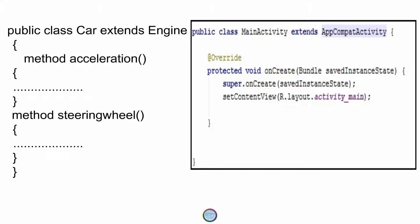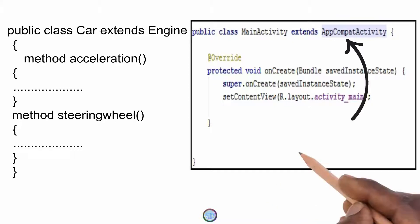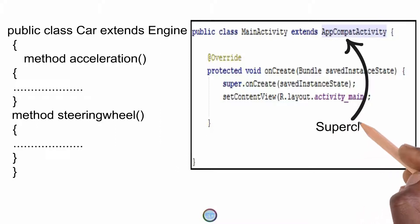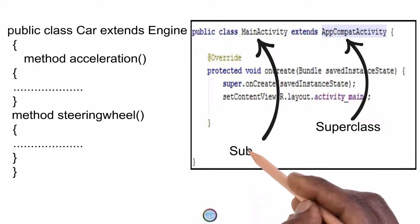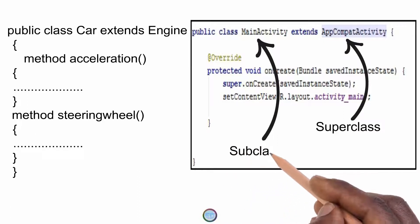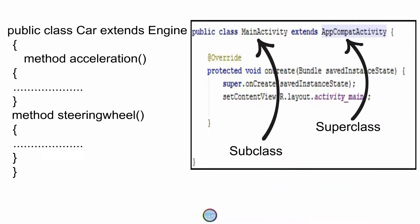So in this case, AppCompatActivity is called a super class as it has some of the main methods defined inside it, and MainActivity is called a sub class because it is inheriting or calling the functions that are inside the AppCompatActivity.